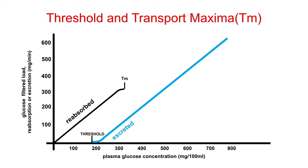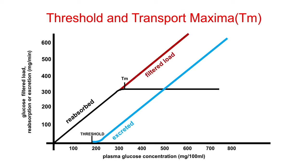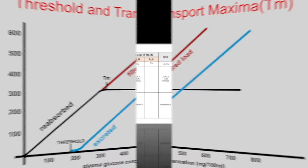Note that the threshold occurs before Tmax is reached, indicating that not all nephrons have the same Tmax for glucose. Some nephrons therefore begin to excrete glucose before others reach their Tmax. This is what we call the splay phenomenon.